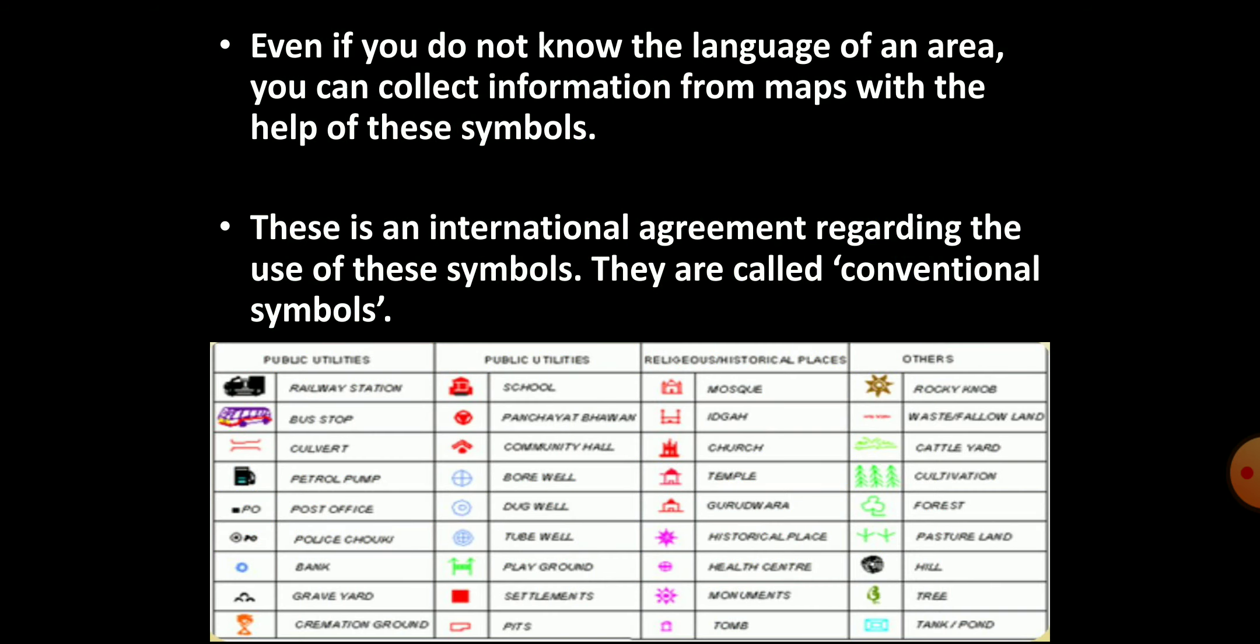So, even those people who are not literate or do not know the language of an area and therefore cannot even ask someone for directions, they can also collect or gather information from maps with the help of the symbols. This way, we can say that maps have a universal language that everyone can understand through the directions, scales, symbols, etc.